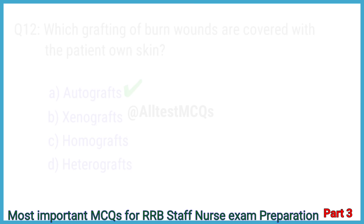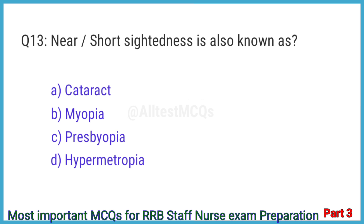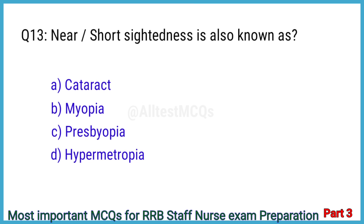Question No. 13. Near or short-sightedness is also known as? The right answer is Option B: Myopia.